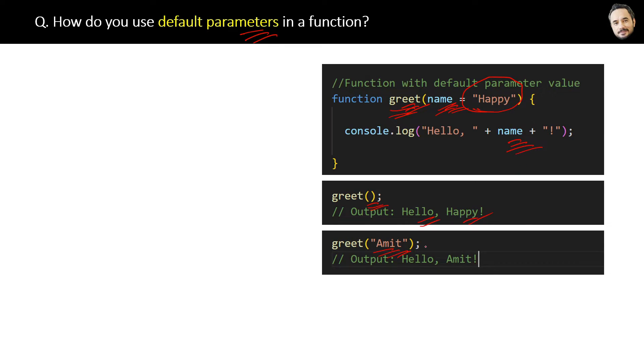something like this, then the default value 'Happy' will be suppressed or you can say ignored, and the passed argument value will be considered. We will get the output as 'Hello, Amit!' In short, the answer is